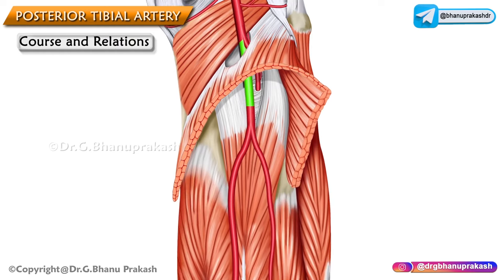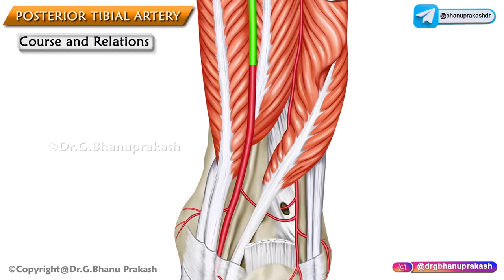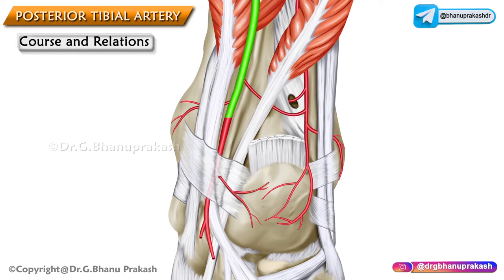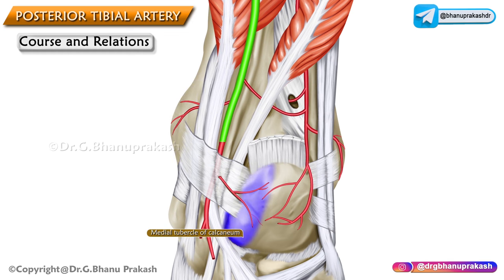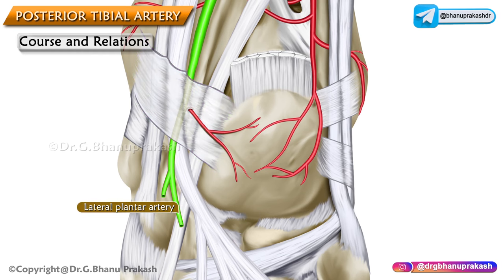In the leg it runs downwards and slightly medially to reach the posteromedial side of the ankle, that is midway between the medial malleolus and the medial tubercle of the calcaneum. It terminates deep to the flexor retinaculum by dividing into the large lateral plantar artery and the small medial plantar artery.